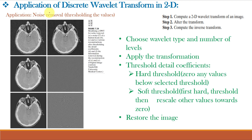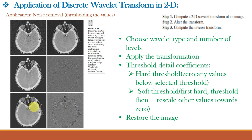This is the second application of DWT: noise removal by thresholding the values. Figure A shows a noisy CT scan of a human head. Figures B, C, and E show various reconstructions after thresholding the detail coefficients. Figures D and F show the information that is removed during the reconstruction of C and E. The steps are: choose the Wavelet and number of levels, apply the transformation process, threshold the detail coefficients, and finally restore the image.